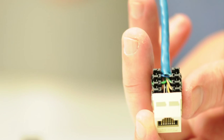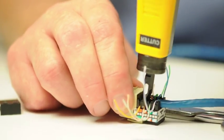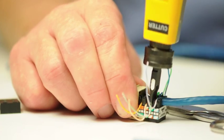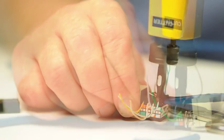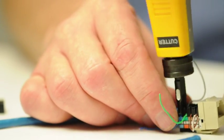For most applications, choose the 568B color code. Take your punch-down tool and fully push the conductors into the IDC connectors. The punch-down tool should also trim the excess cable.